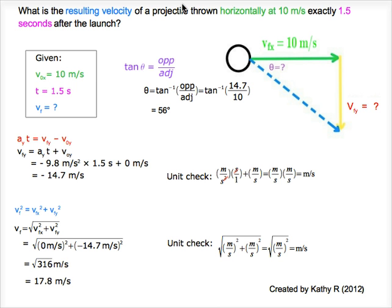Horizontally at 10 meters per second gives us the initial velocity of 10 meters per second in x direction. 1.5 seconds gives us the time of 1.5 seconds, and the question is asking for the resulting velocity, which is Vf.